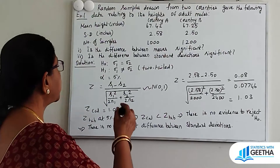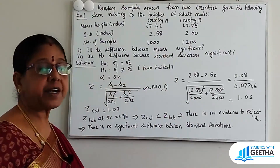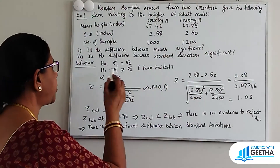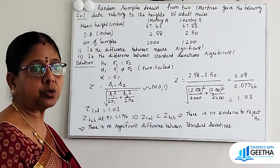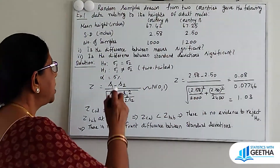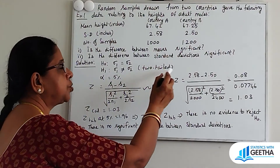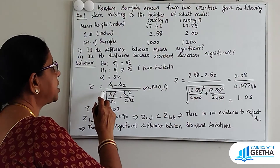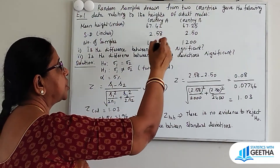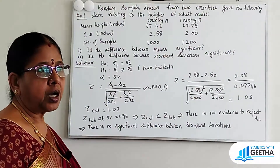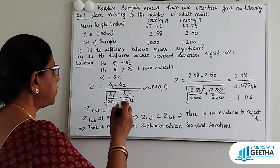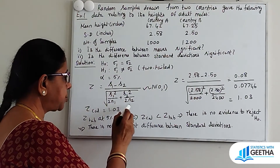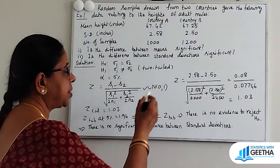Part 2: Is the difference between standard deviations significant? H0: sigma1 = sigma2 — the population standard deviations are equal. H1: sigma1 ≠ sigma2, a two-tailed alternative. Alpha = 5%. Since sigma1 and sigma2 are unknown, we use the formula: Z = (S1 − S2) / sqrt(S1² / 2N1 + S2² / 2N2), which follows Normal(0,1).